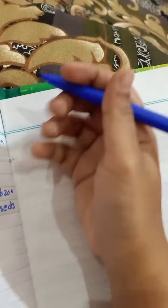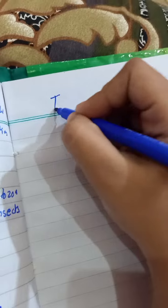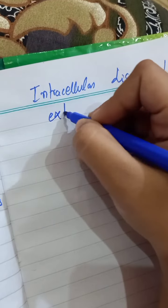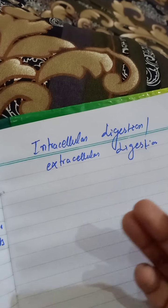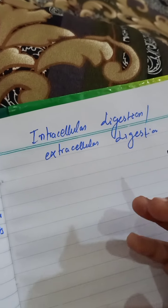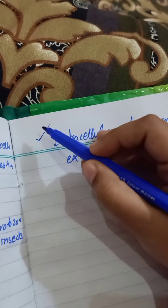Okay, so we were at the intracellular digestion and extracellular digestion. Let me give you the overview of this. Intracellular digestion is the digestion which occurs inside the cell. Because the food particles are smaller, they can easily enter into the cell and be digested. So the digestion that occurs inside the cell is called intracellular digestion.